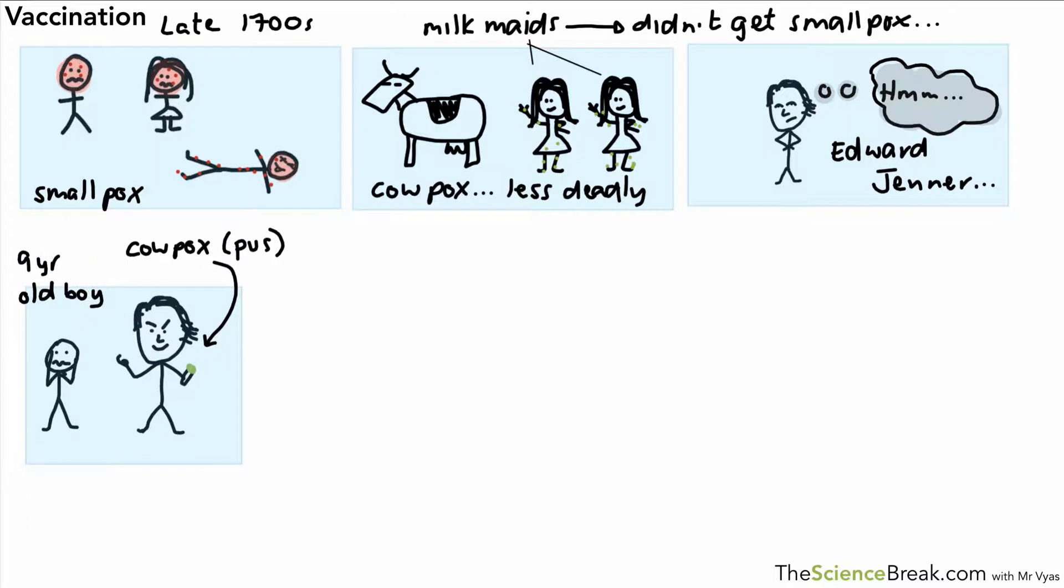The young boy actually caught the cowpox and because it was a less deadly disease, he recovered from cowpox but that wasn't the end of the story. He recovered from this disease cowpox but then the next stage was to infect him with the smallpox virus, and of course they didn't know about viruses then.